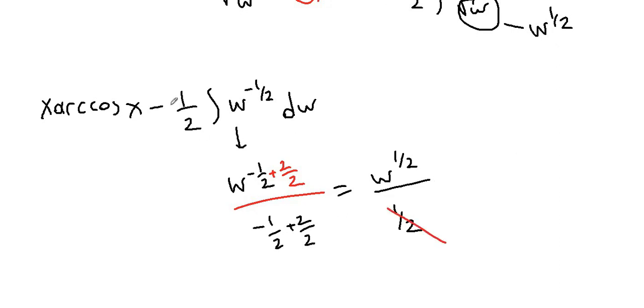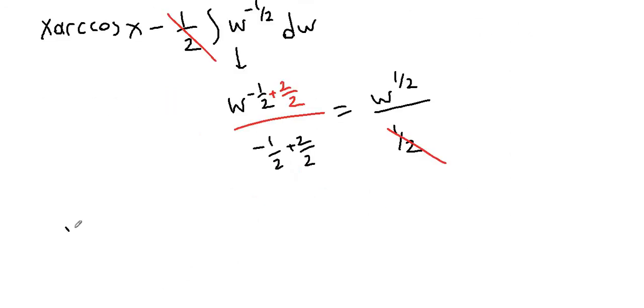This one half cancels this one half, and we have x arccos of x minus w to the one half